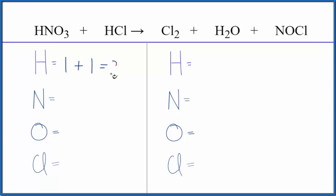So we have two hydrogen atoms, one nitrogen, oxygens we have three, and then one chlorine on the left side.